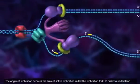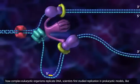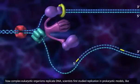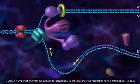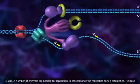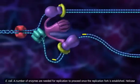In order to understand how complex eukaryotic organisms replicate DNA, scientists first studied replication in prokaryotic models like E. coli. A number of enzymes are needed for replication to proceed once the replication fork is established.